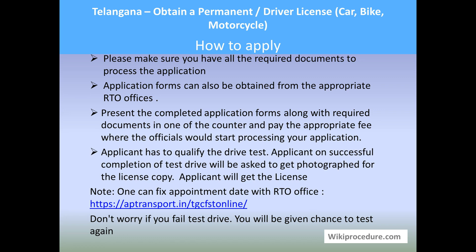Application forms can also be obtained directly from the RTO office. Fill in the forms along with the documents and hand them to an officer, who will notify you of the fees and the counter where you have to pay. Pay the correct fees and submit the application form and documents at the counter. The officer will receive, cross-check, and verify your documents, then give you a time for the test drive. After the test drive, you will be given a time for a photograph and digital signature, which will appear on the driving license. Upon completion, you will be issued the permanent driving license.